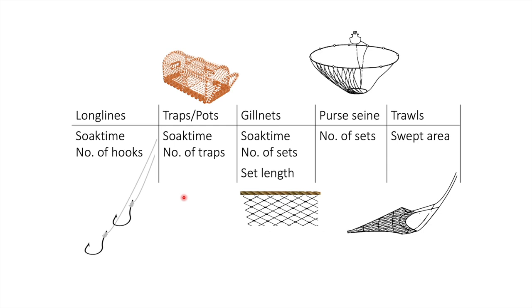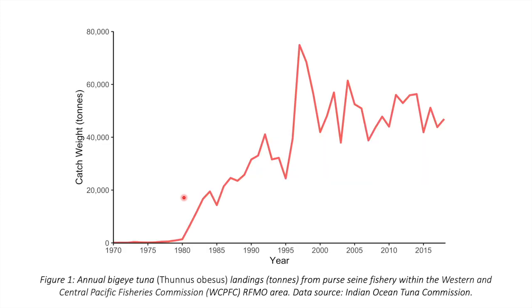To highlight the importance of accounting for effort in any kind of fishery data, I will quickly use the example of the bigeye tuna purse seine fishery. This data is for the fishery in the area covered by the Western and Central Pacific Fisheries Commission RFMO, and it clearly shows an overall increase in tuna landings since 1970, but with a peak in 1997.